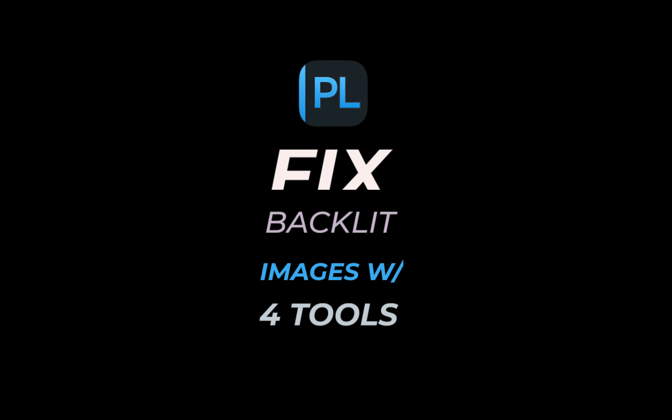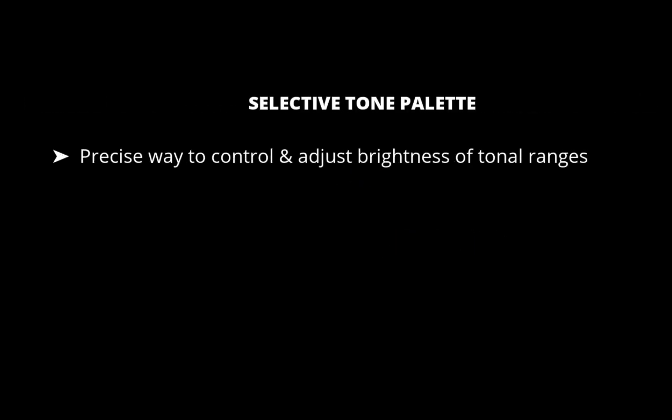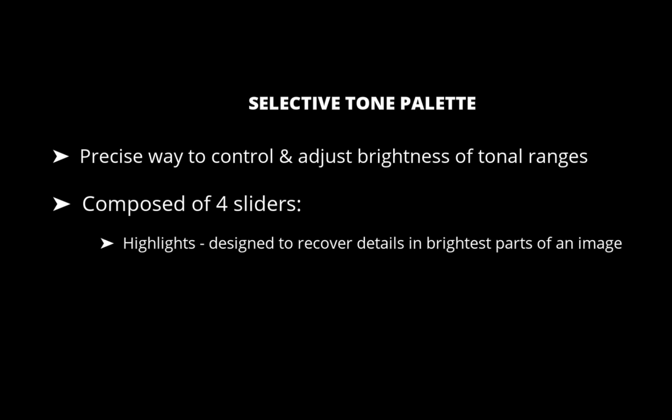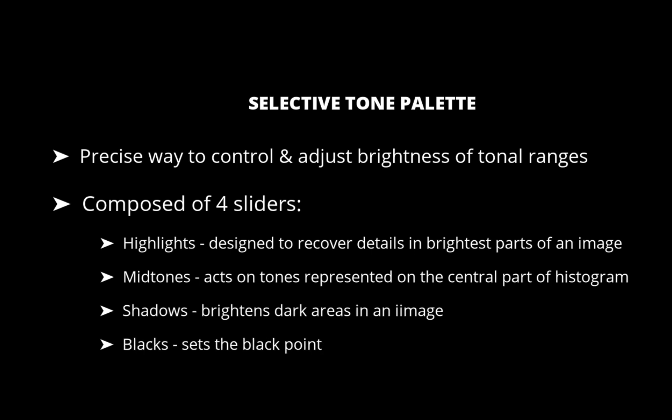The first tool is using global adjustments with the Selective Tone palette. According to DxO, this tool is a very intuitive and precise way to control and adjust the brightness of well-defined tonal ranges in an image. It has four sliders: Highlights, designed to recover information and details in the brightest parts of the image; Midtones, which acts on tones represented in the central part of the histogram; Shadows, which lets you brighten the shadows and dark areas; and Blacks, which lets you set the black point in your image.